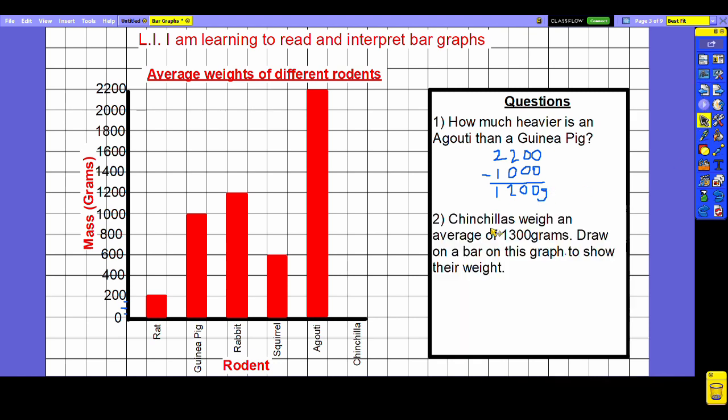This last question is telling us that chinchillas weigh an average of 1300 grams and we're being told to draw on a bar on this graph to show their weight. We can see that the chinchilla bar is missing and we need to put it in. If I was doing this with pencil and paper I'd be getting out my pencil and ruler and find where 1300 is on the y-axis.